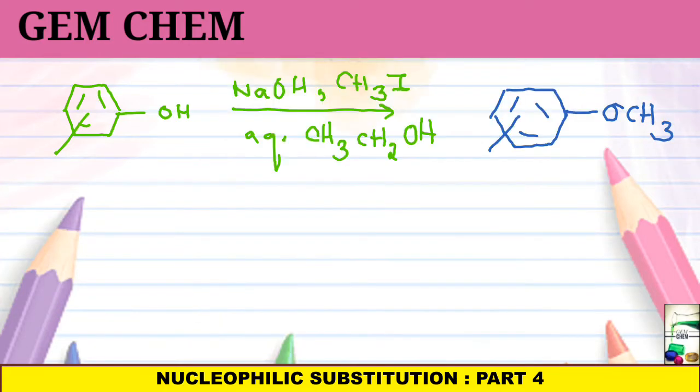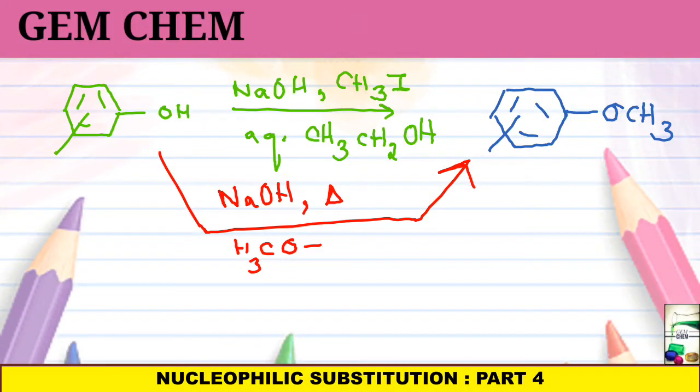Another way to do this is, if we do it like this by adding NaOH, heat and we take OCH3, S double bond O, S double bond O and O minus. This is methyl sulfate. So, this will give again the same product.